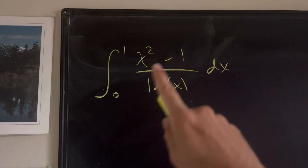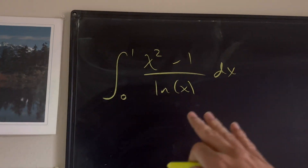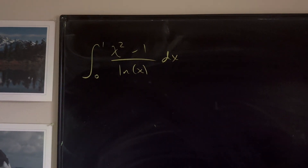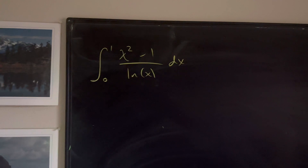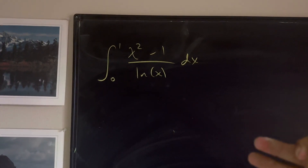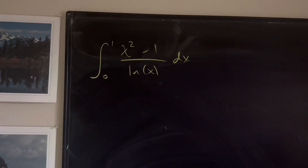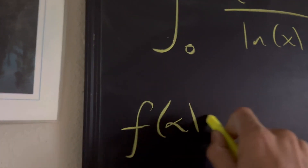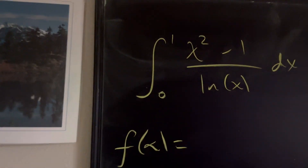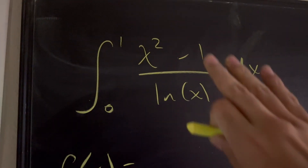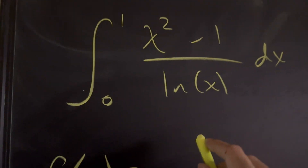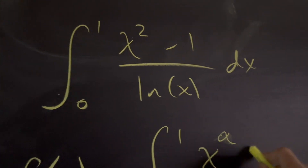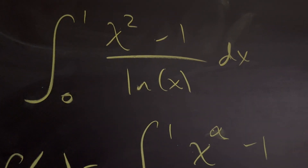We have an integral from 0 to 1 of (x squared minus 1) over natural log of x. A lot of people already know what the answer is going to be — it appears in a lot of MIT integration problems. If you try to use u-substitution or any other technique, you'd notice that it's not going to really work. So using the Feynman technique, we're going to create a function f(alpha), which changes something in the original function. This becomes the integral from 0 to 1 of (x to the power of alpha minus 1) over natural log of x dx.